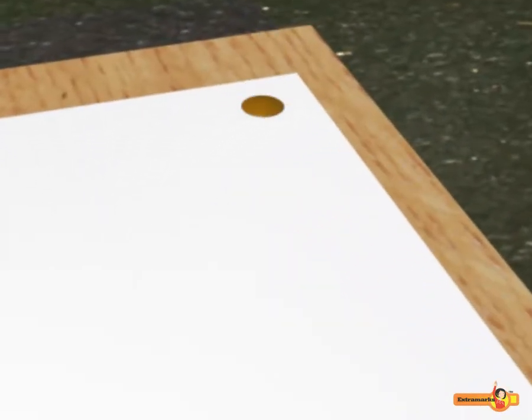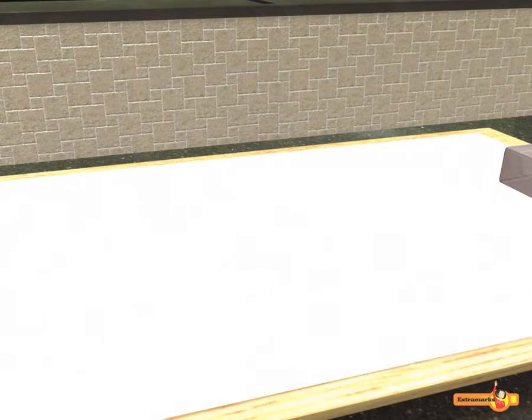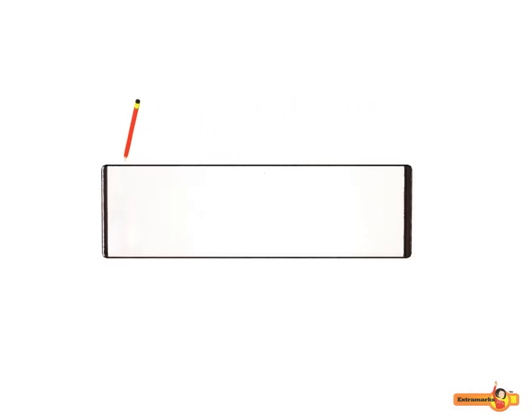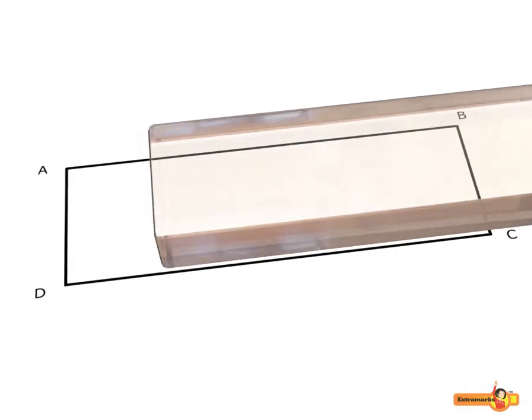Place a sheet on a wooden board and fix it with the help of board pins. Place a rectangular glass slab on the paper sheet. Trace the boundary of the glass slab and mark the points A, B, C and D. Now, remove the glass slab.